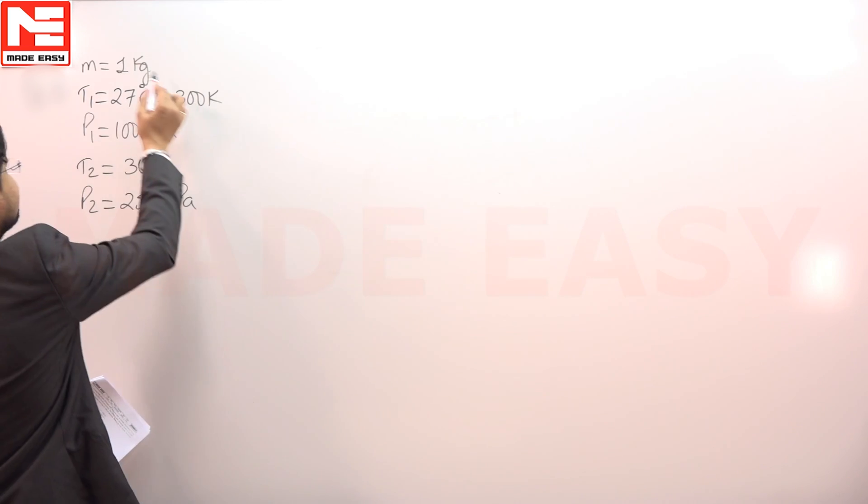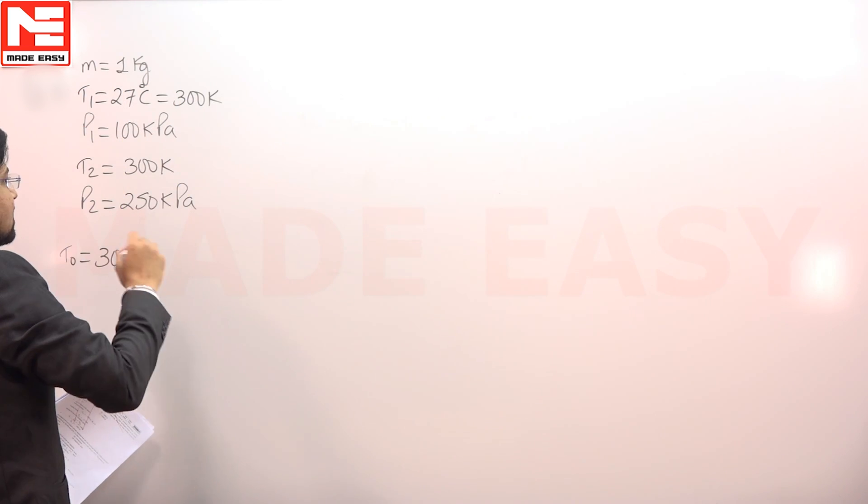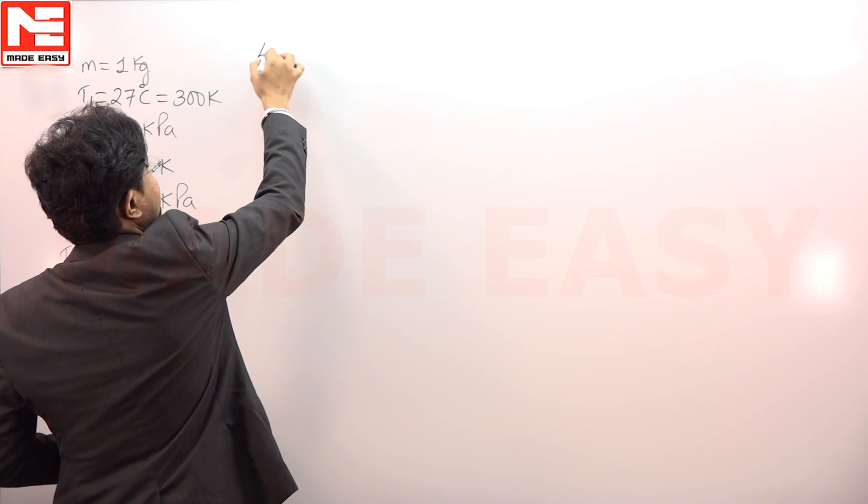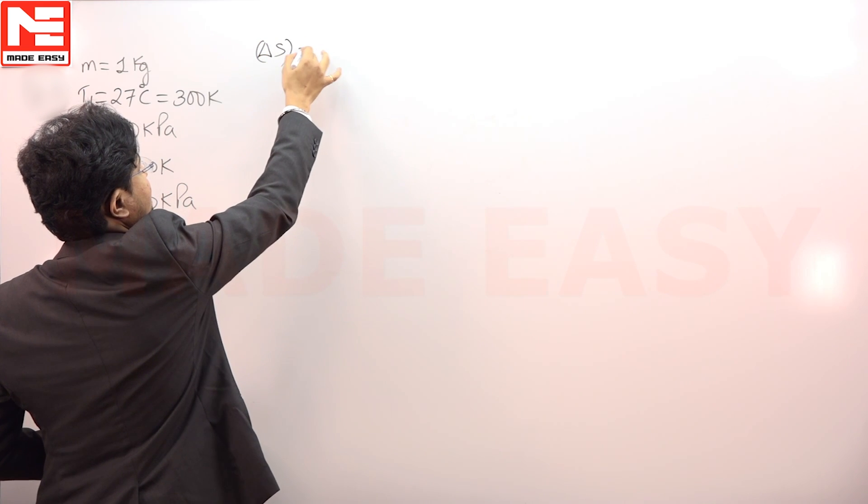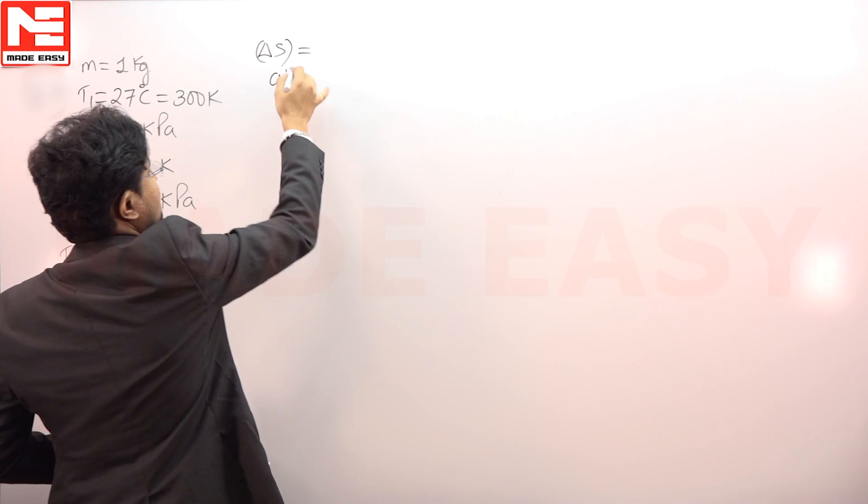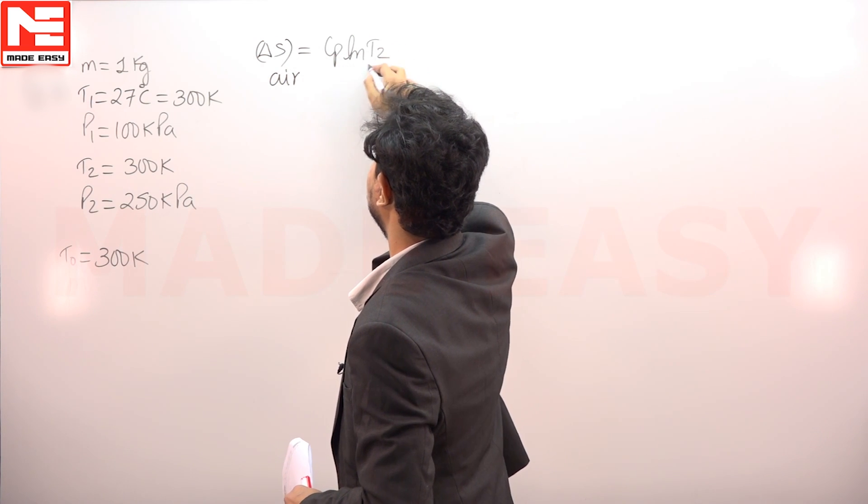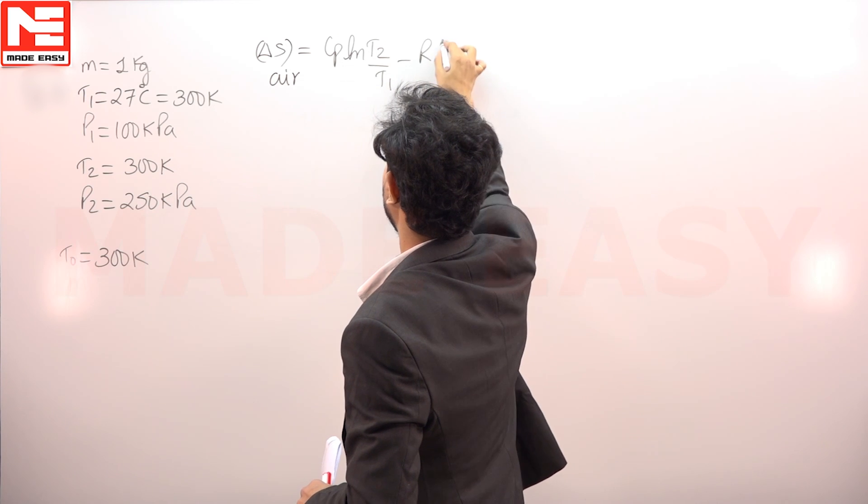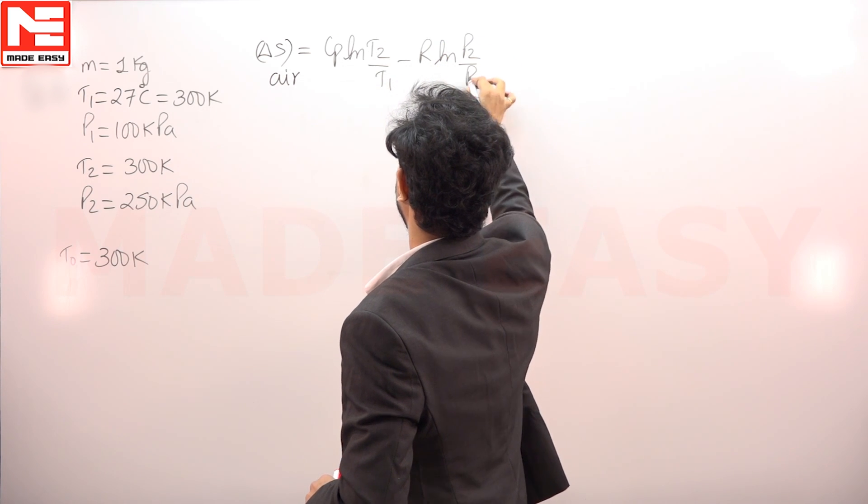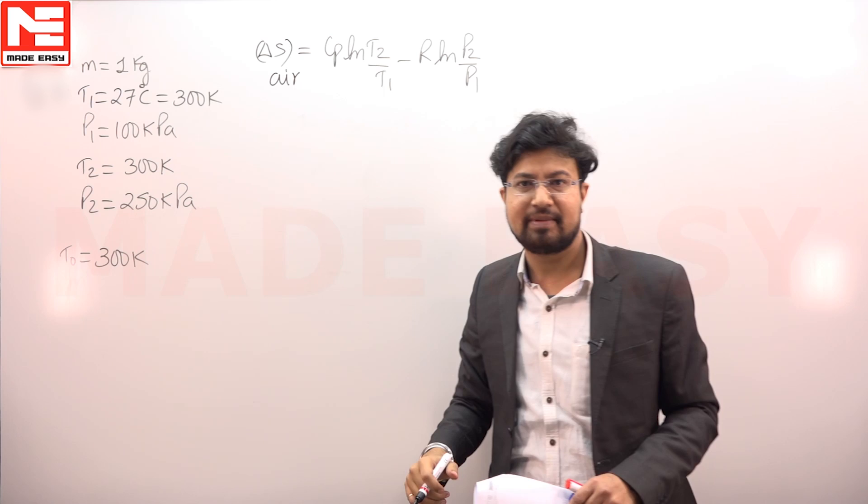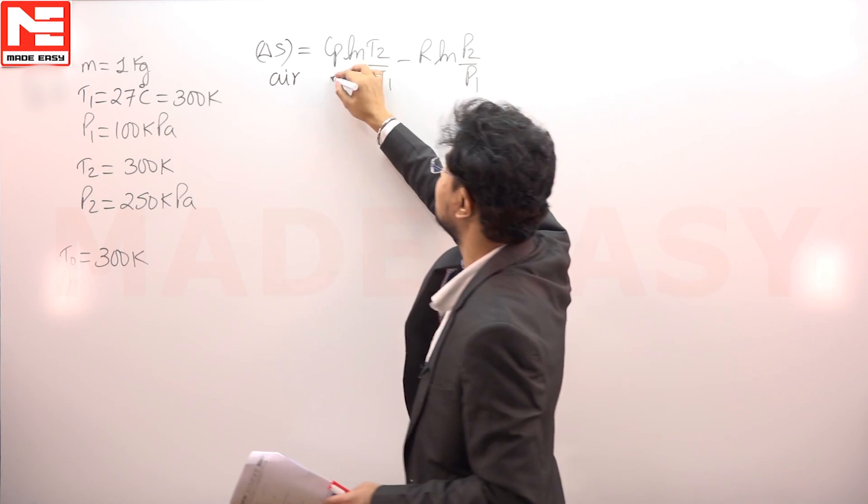If we see the entropy change of the air, the entropy change of the air can be written as CP ln T2 by T1 minus R ln P2 by P1. Initial temperature and final temperature for the air is same, so this term will become 0.